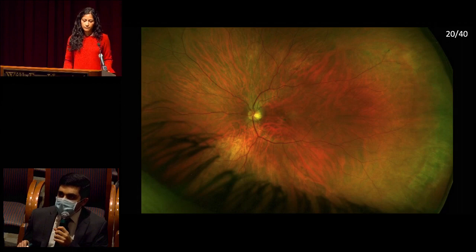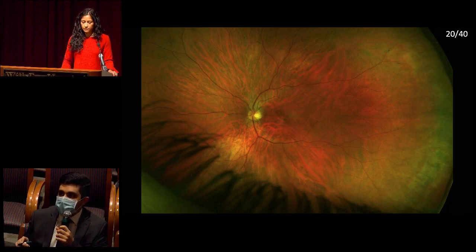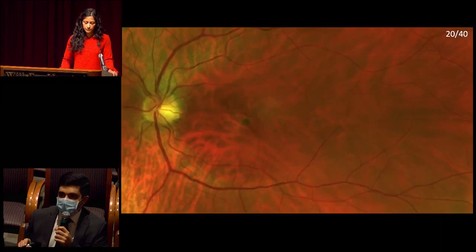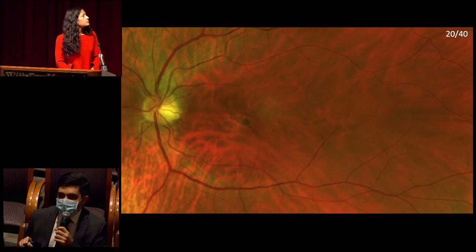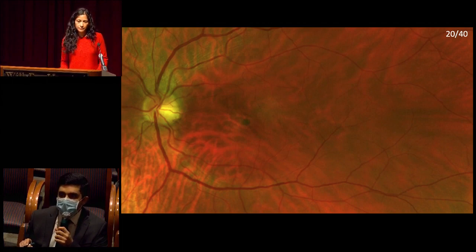In the left eye, 20-40 vision. The media is clear. The disc also has a tilted appearance with sharp distinct margins and peripapillary atrophy. Vasculature has normal course and caliber, with peripheral lattice degeneration temporally. In the macula, there is a dark pigmented — possibly dark red — deep lesion corresponding to the anatomic fovea. It is hard to appreciate obvious subretinal fluid, but on exam it was noted to be a hemorrhage with associated pigmentary changes.